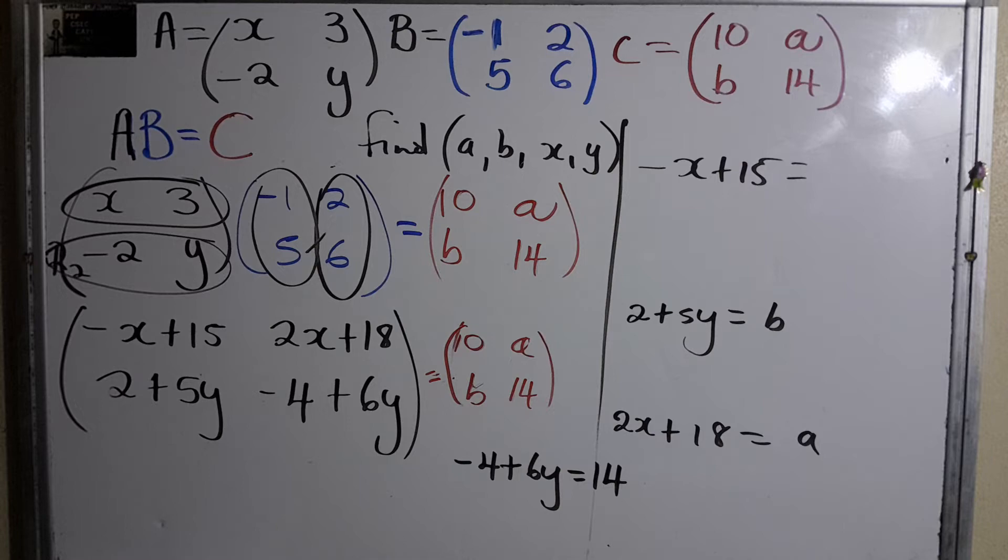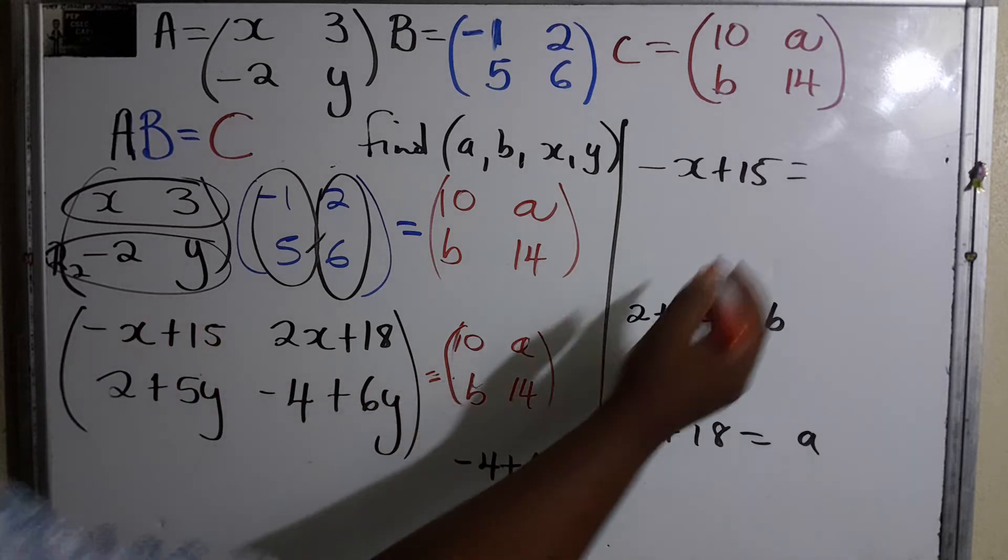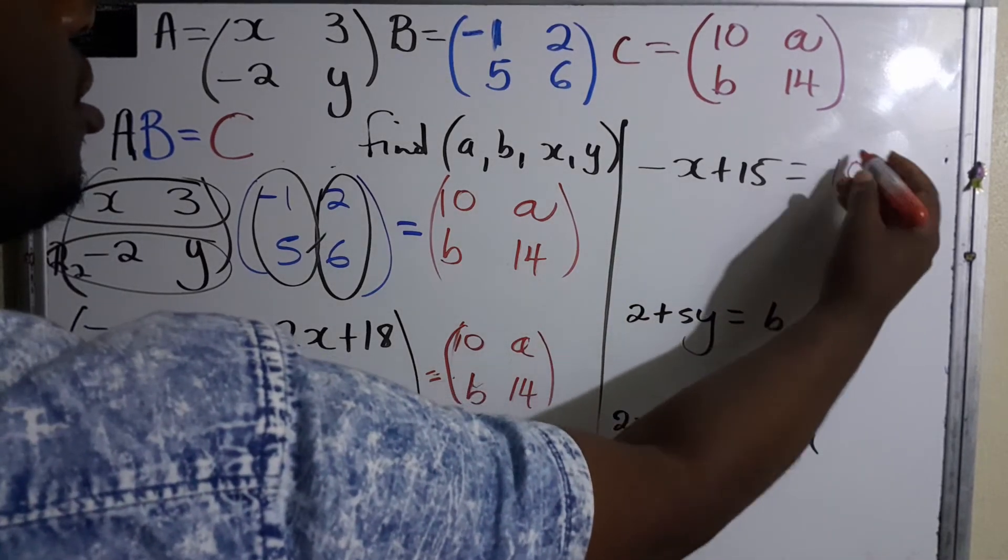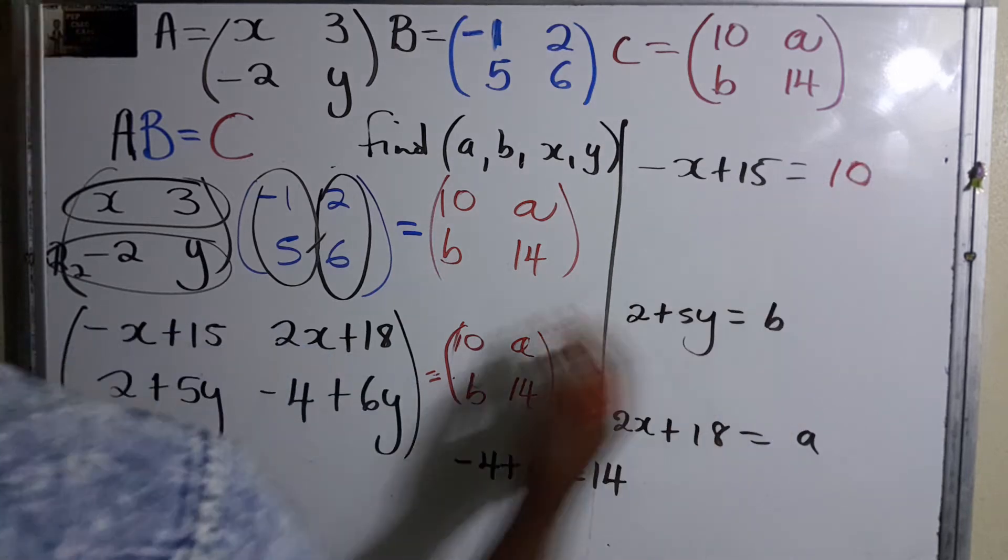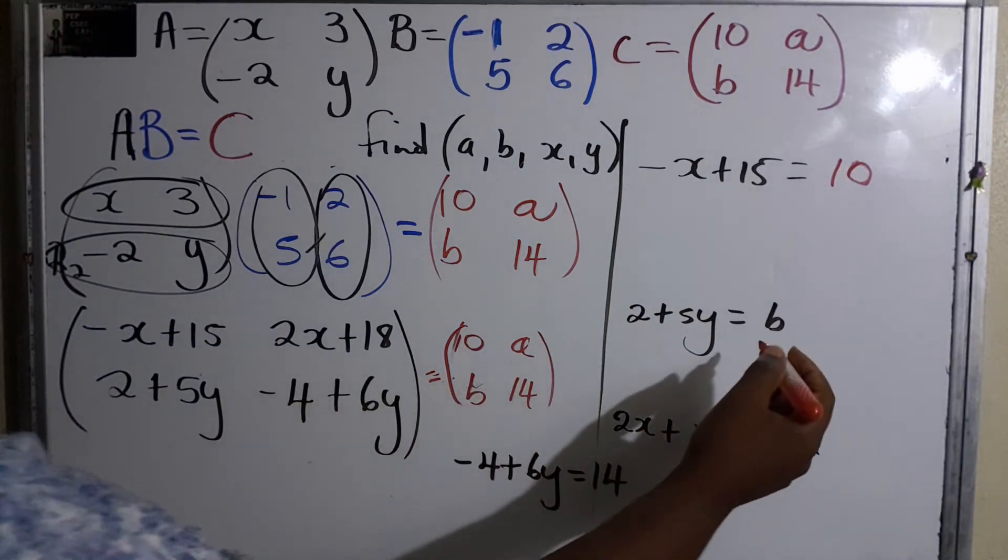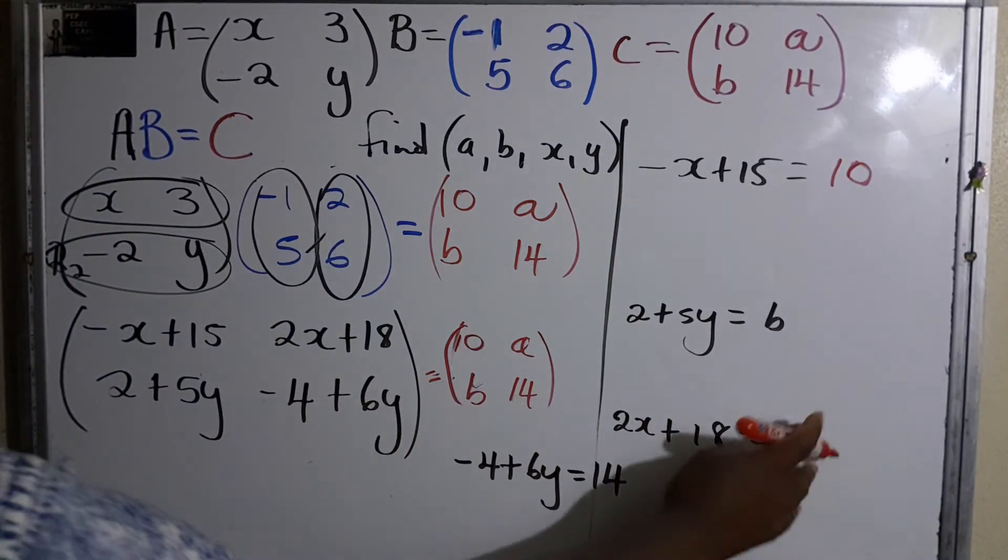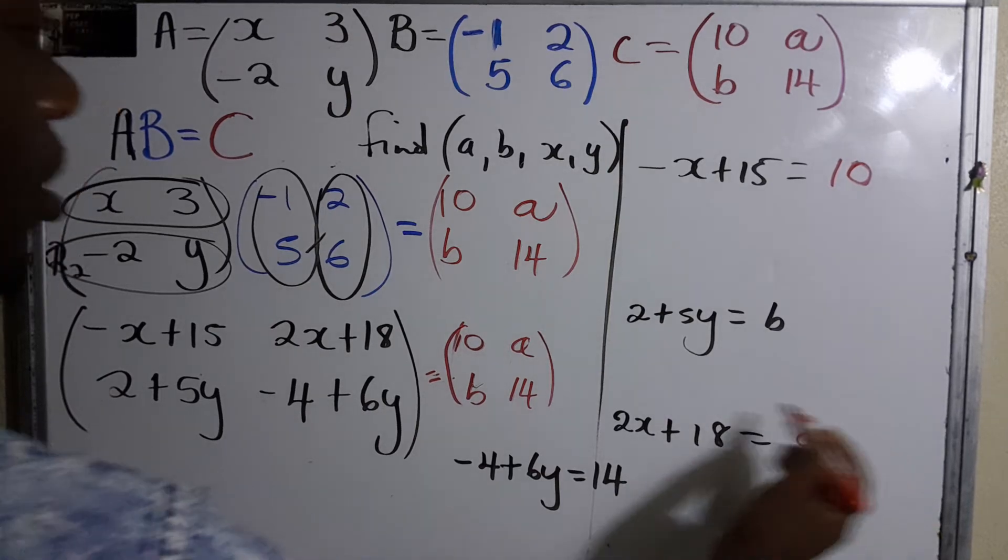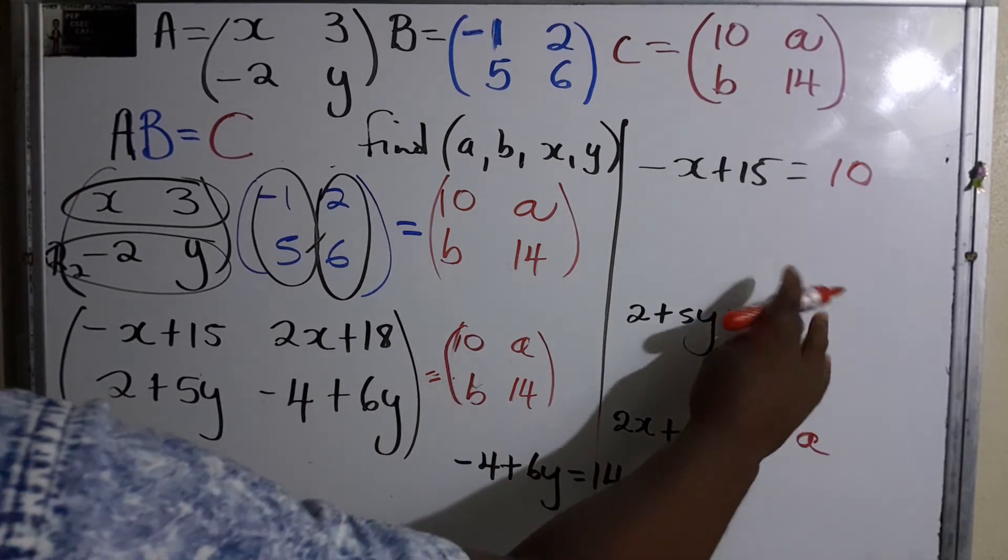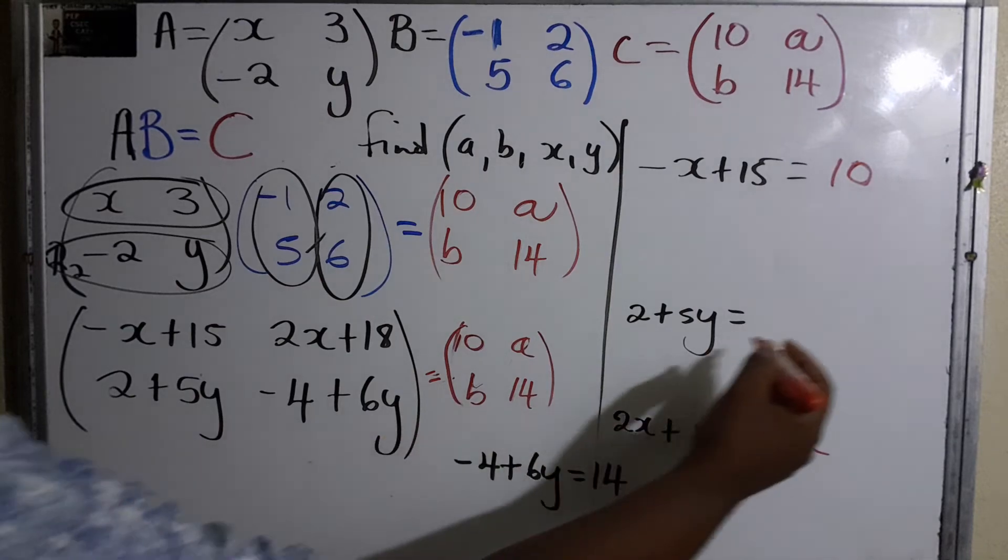All of these is corresponding. This must equal to 10. 2x plus 18 is equal to a. That's already there. And of course this must be equal to b: 2 plus 5y.